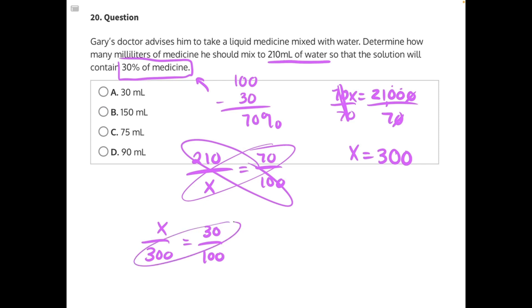We cross multiply again. 3 times 3 is 9, add all three of those zeros, equals x times 100, 100x.